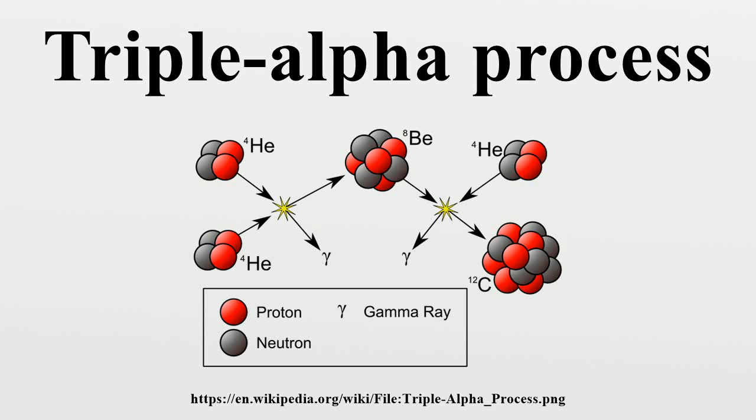Older stars start to accumulate helium produced by the proton-proton chain reaction and the carbon-nitrogen-oxygen cycle in their cores.